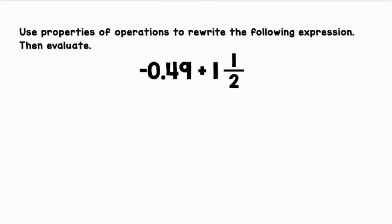Use properties of operations to rewrite the following expression, then evaluate: negative 49 hundredths plus one and one half. This expression may look intimidating to solve, but once we rewrite it, it will look a little friendlier. First, notice we have one decimal and one mixed number. We want to convert one of them so they're both in the same form. I'm going to choose to use all decimals: negative 0.49 plus 1.5.